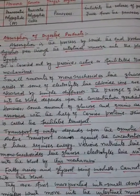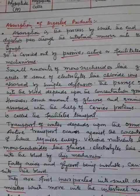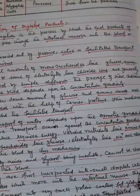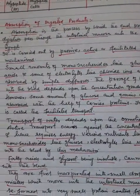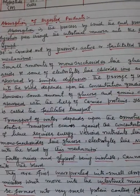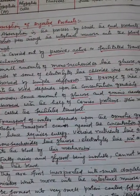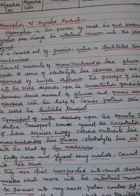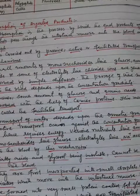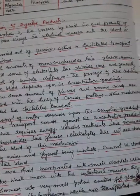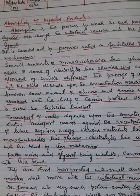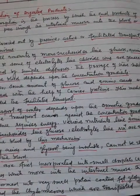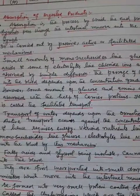Small amounts of monosaccharides like glucose, amino acids, and some electrolytes like chloride ions are generally absorbed by the simple process of diffusion. The passage of these substances into the blood depends upon the concentration gradients.